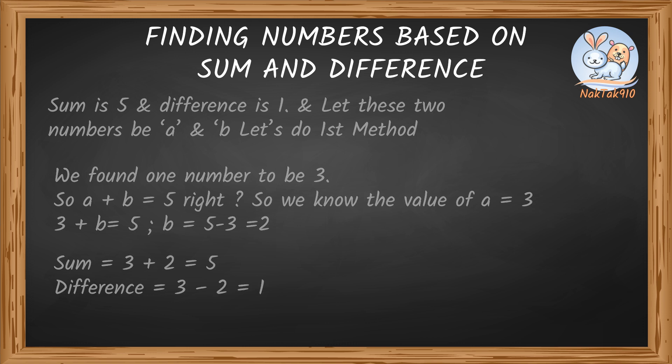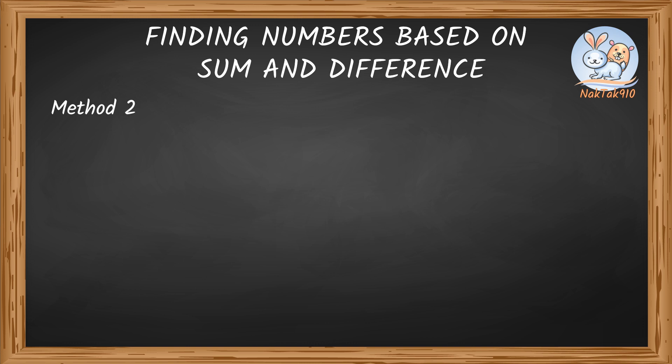Okay, here's another way. To find one number, just add the sum and difference together, and then divide it by 2. By simply using this, we can find the two numbers whenever their sum and difference is given.